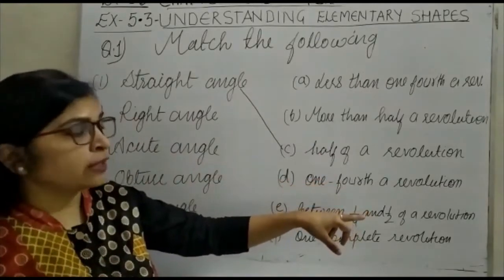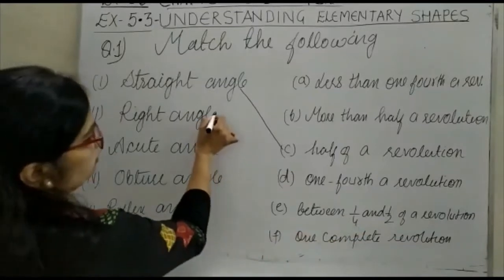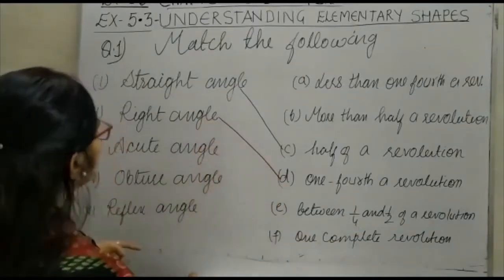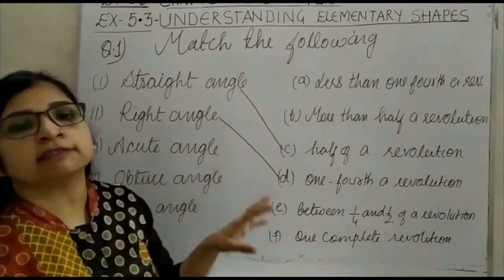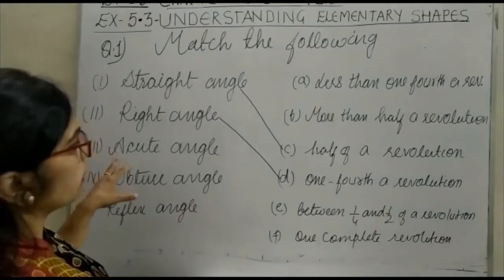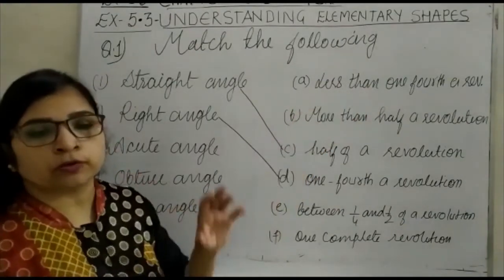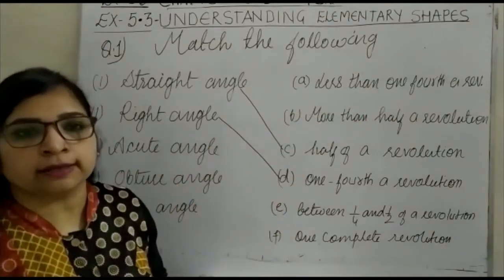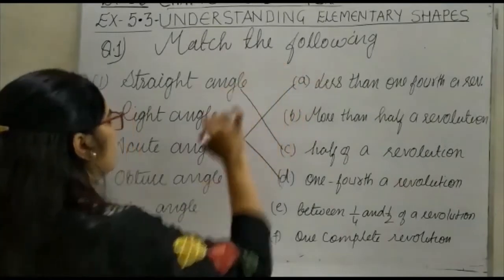Now comes acute angle. Acute angle is an angle less than 90 degrees. So if it is an angle less than 90 degrees, that means less than one fourth of a revolution, because one fourth revolution is 90 degrees. So acute angle is option A.